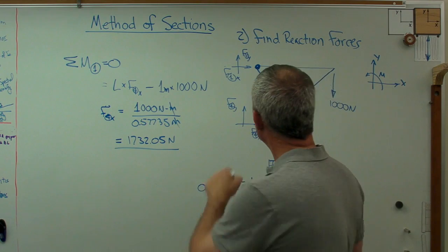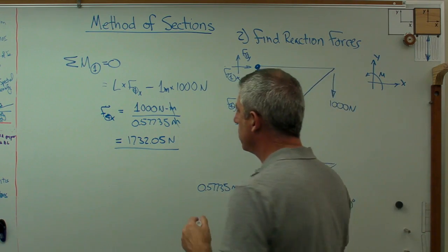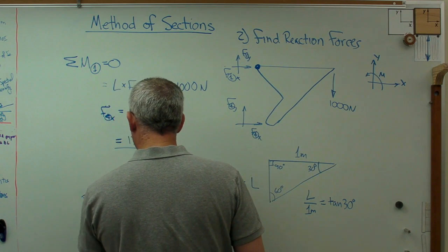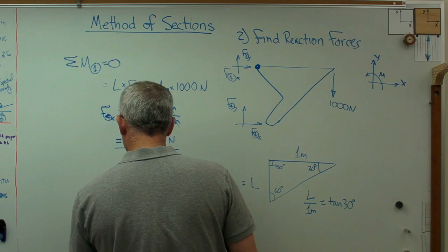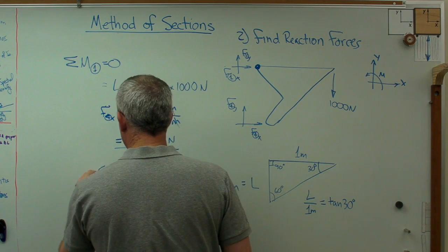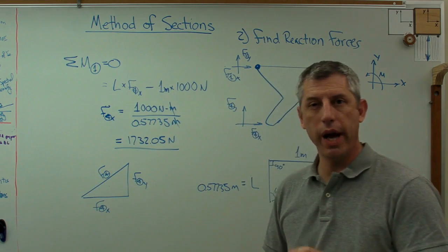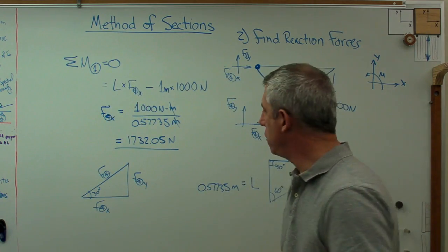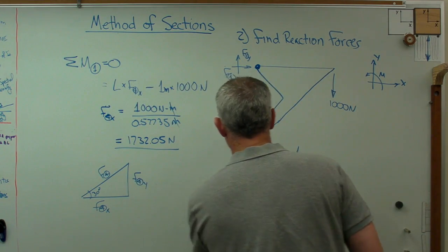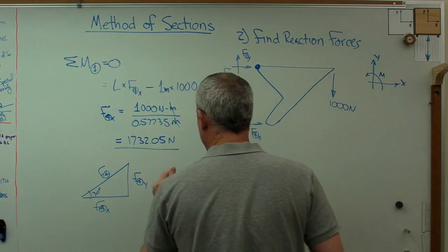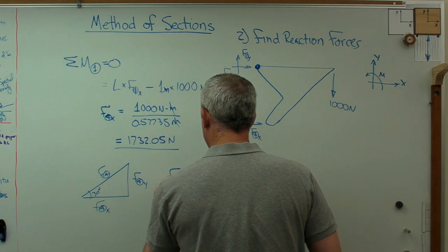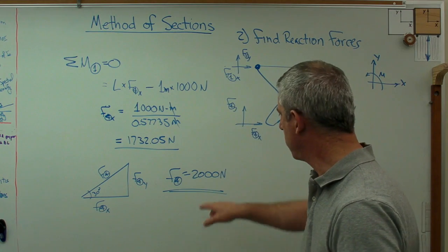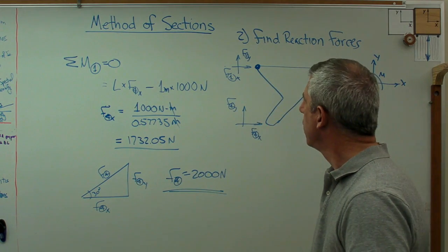The last thing I need is the vector sum of those forces. Here's the force triangle at joint four: there's F4x, there's F4y, and there's F4. The circles indicate these are reaction forces, and that angle is 30 degrees. If you work through the trig, F4 equals 2,000 newtons.